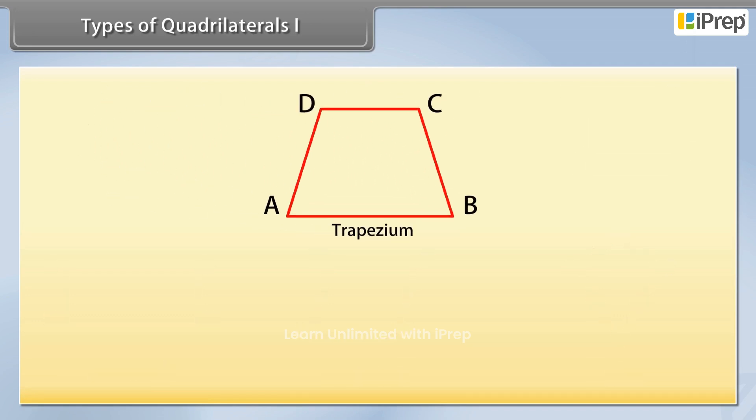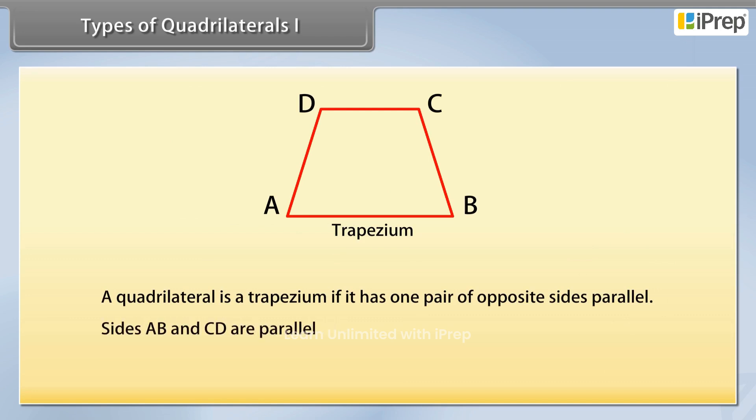First one is trapezium. A quadrilateral is a trapezium if it has one pair of opposite sides parallel. Here opposite sides AB and CD are parallel. So ABCD is a trapezium.